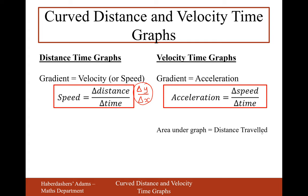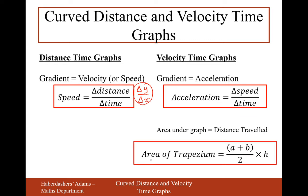Area under the graph is the same as distance travelled. You might have to split your graph into rectangles, triangles, or in some cases trapeziums. It's helpful to have the area of a trapezium formula at hand. If you've got a trapezium that looks like this, then it's a plus b divided by 2 times by h. Note that h here is actually the width of the bar, not the height of the trapezium.